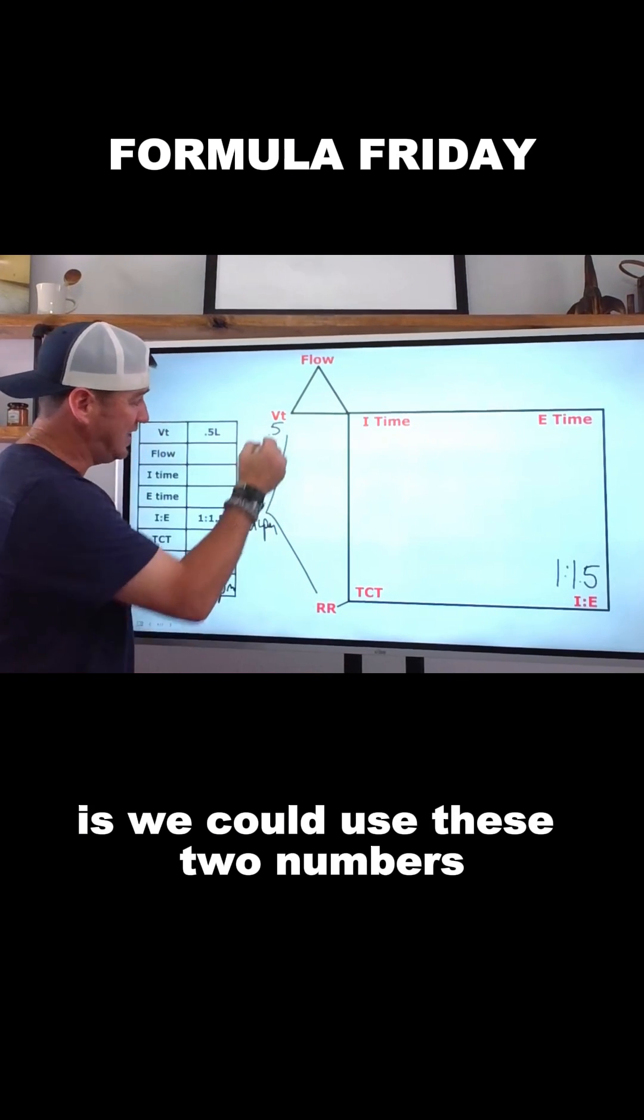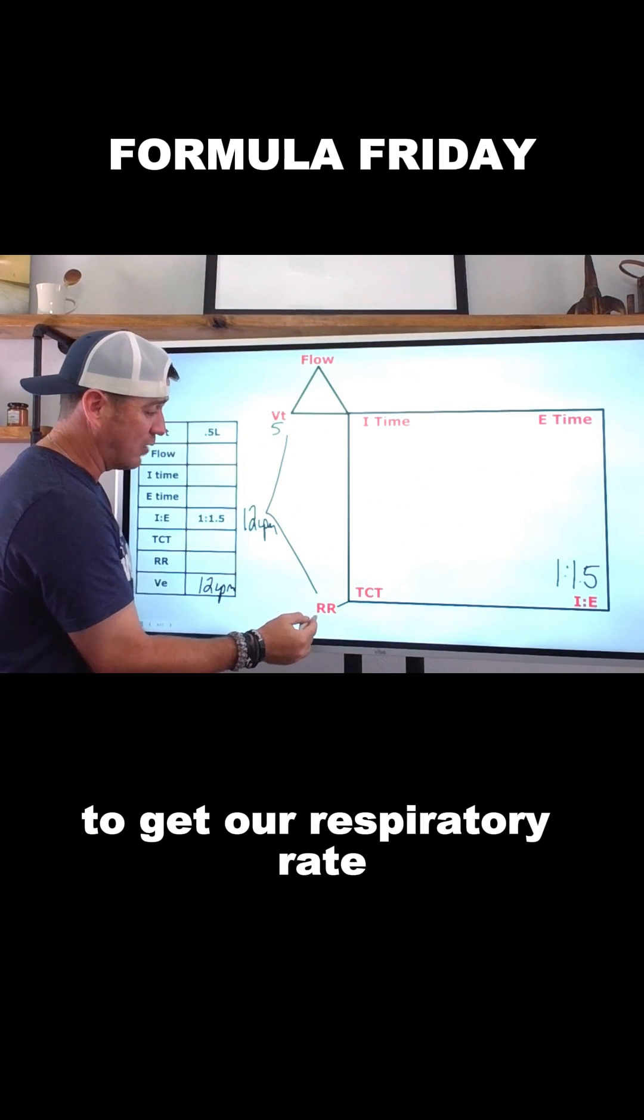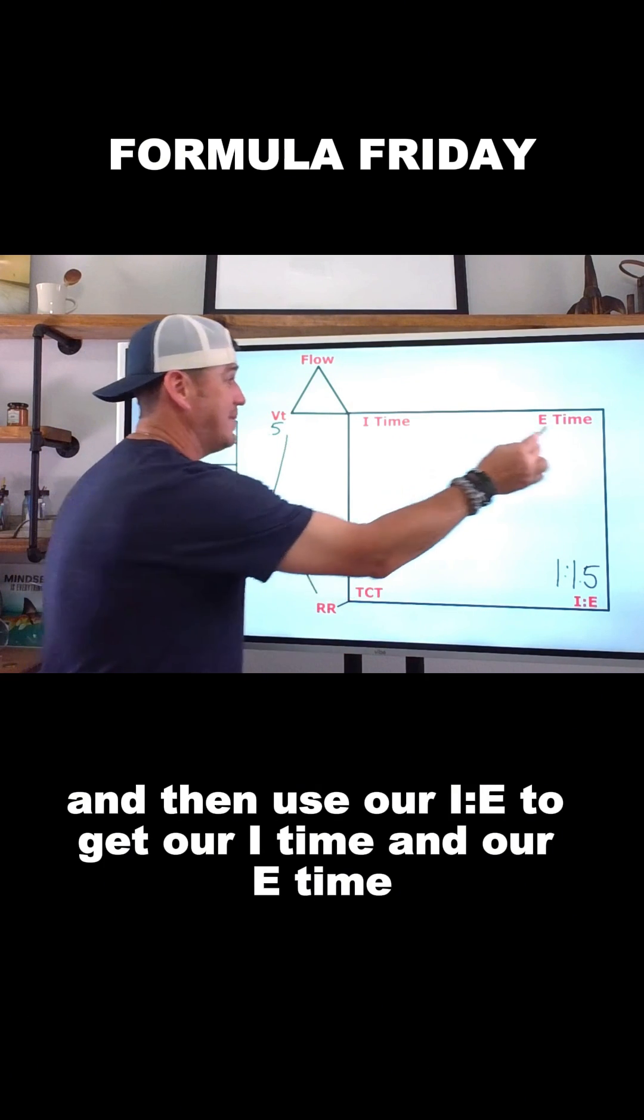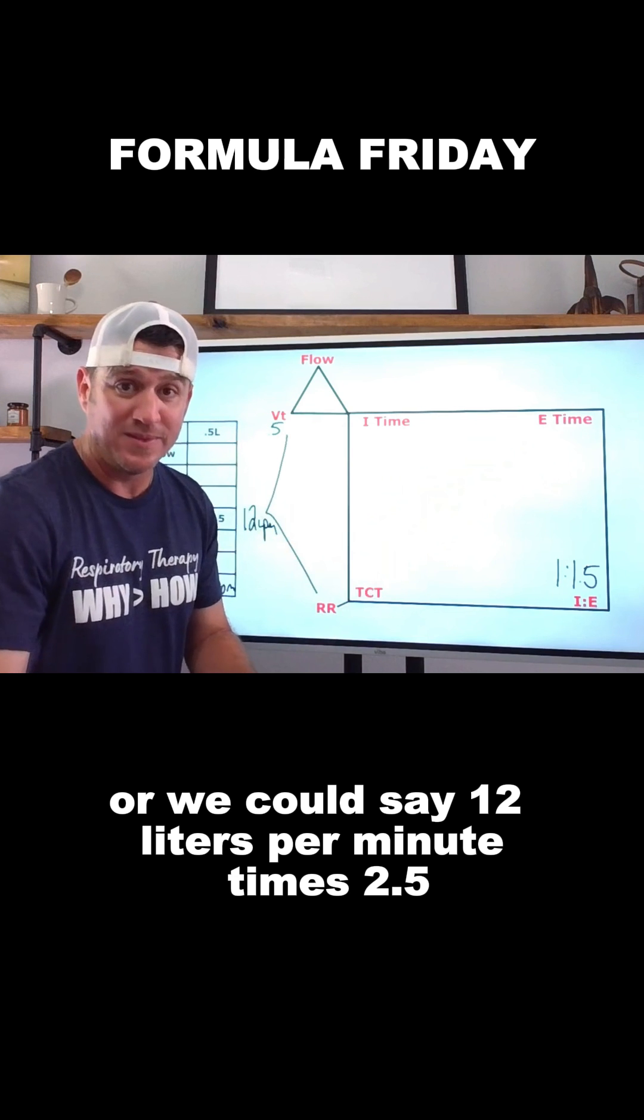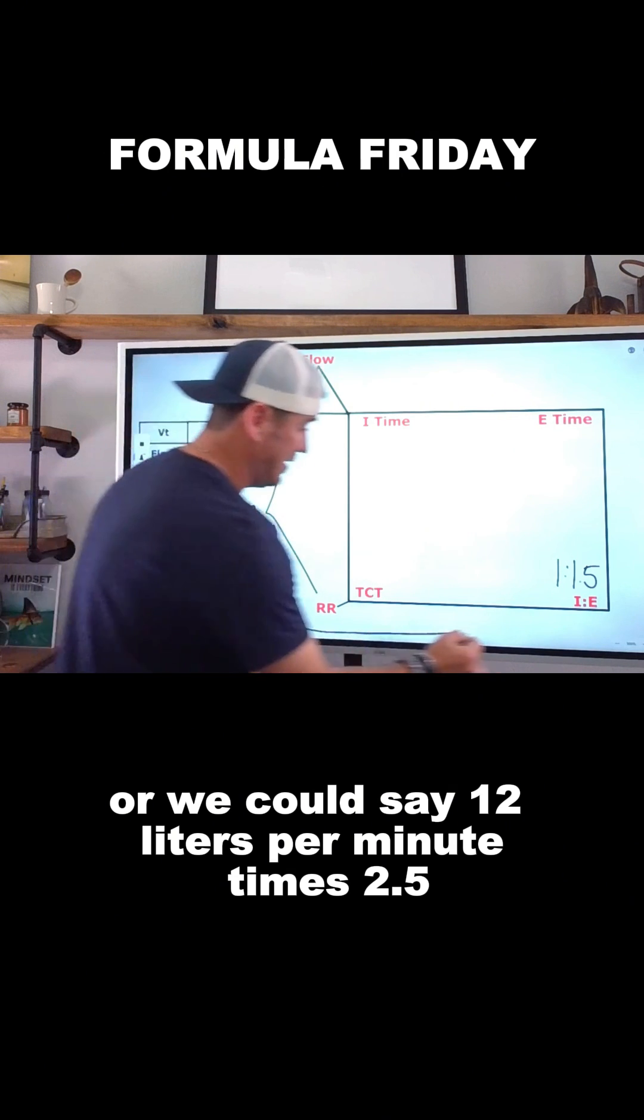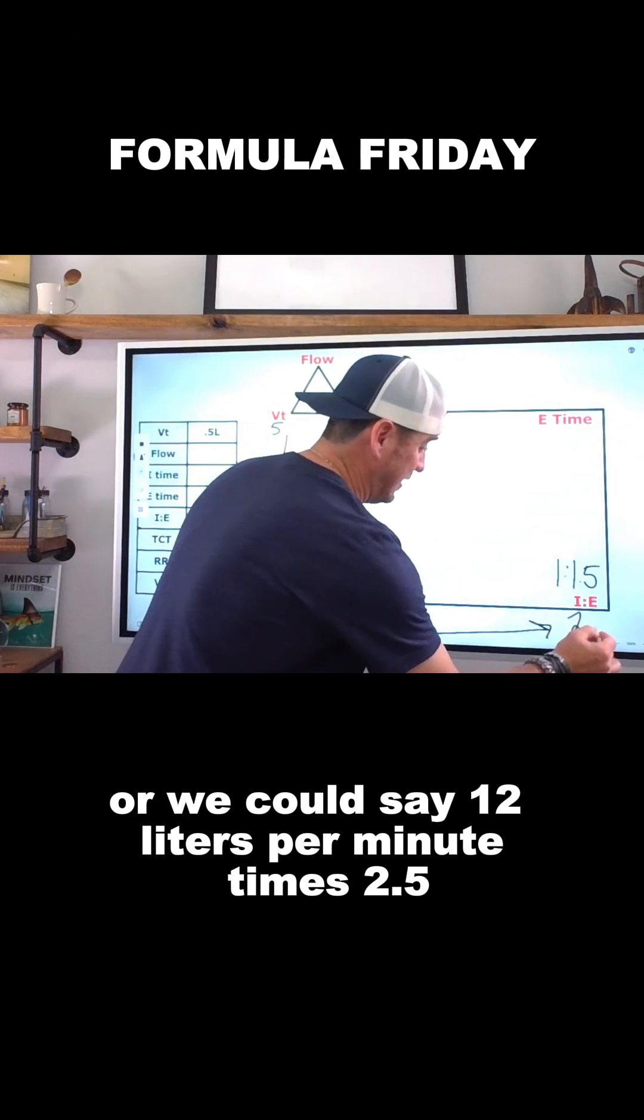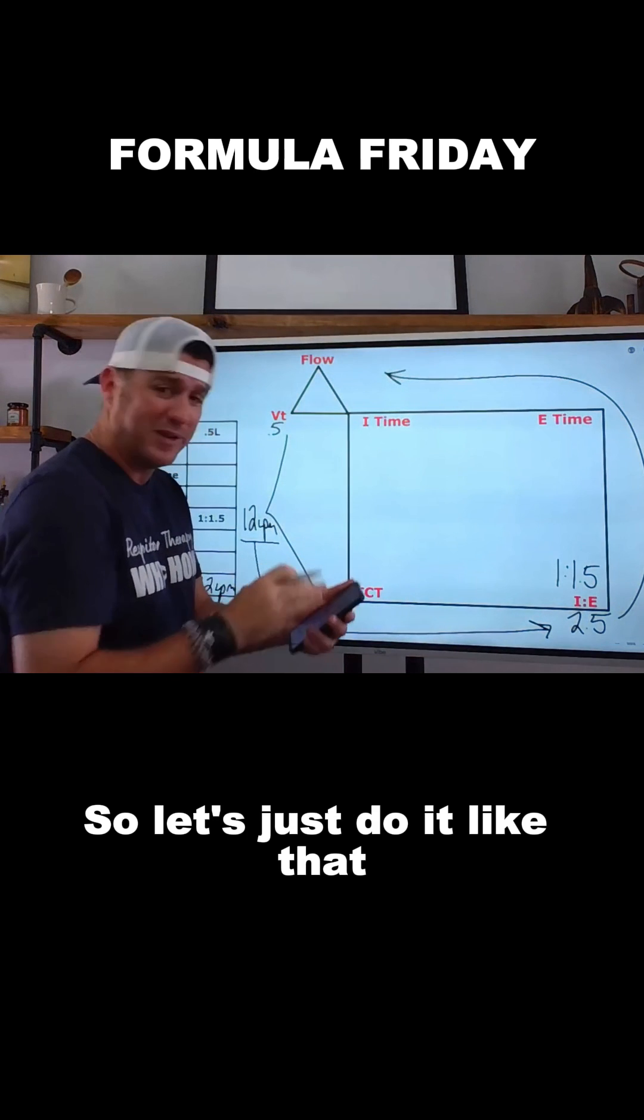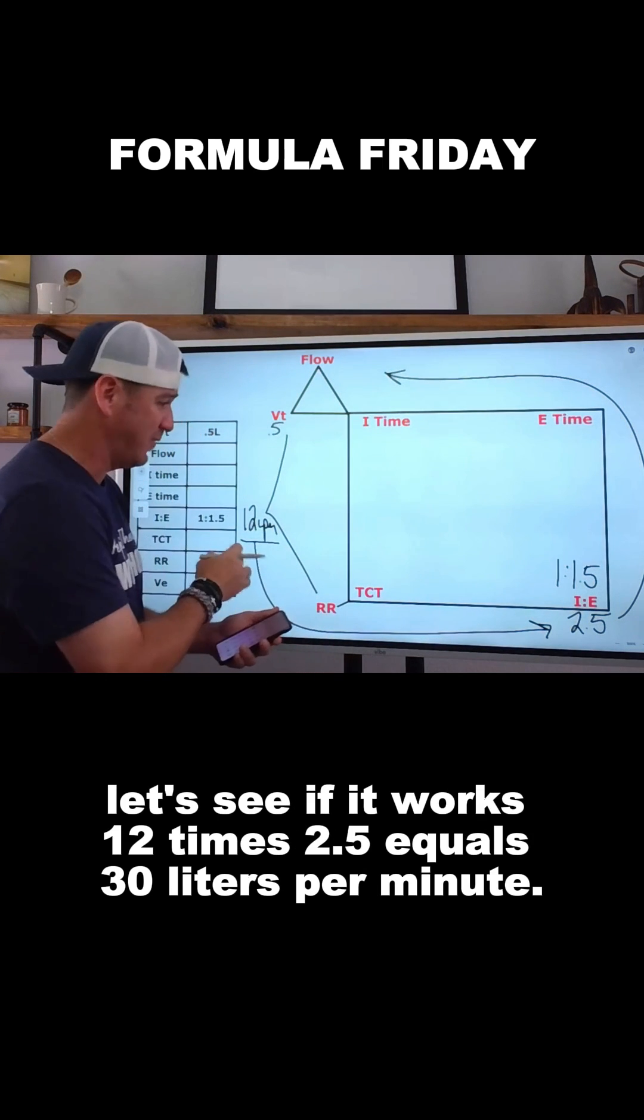Because what we see is, we could use these two numbers to get our respiratory rate, to get our total cycle time, and then use our I:E ratio to get our I time and our E time. Or we could say 12 liters per minute times 2.5 is going to give us our flow. So let's just do it like that. Let's just see what happens when we do it like this.